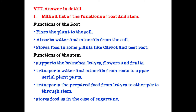Answer in detail: Make a list of functions of root and stem. Functions of the root: fixes the plant to the soil; absorbs water and minerals from the soil; stores food in some plants like carrot and beetroot. Functions of the stem: supports branches, leaves, flowers and fruits; transports water and minerals from roots to upper aerial plant parts; transports prepared food from leaves to other parts; stores food as in the case of sugar cane.